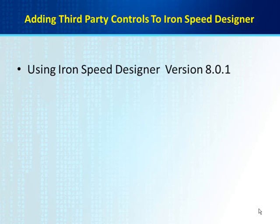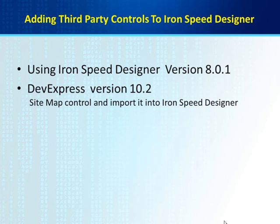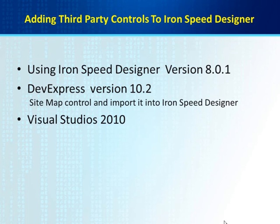We're going to be using Iron Speed Designer version 8.0.1, which is the current version, and I recommend everyone upgrade to the current version. We're also going to be using DevExpress version 10.2, which has the Sitemap control inside, and we're going to import this into Iron Speed Designer. We're going to be using Visual Studio 2010, and we're going to be using an XML database or data store to make the Sitemap look nice.